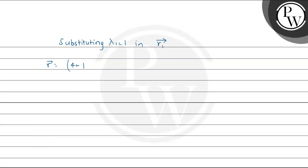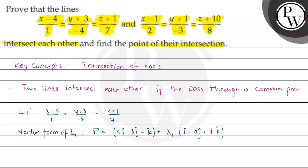Substituting λ1 = 1 into R1 = (4 + λ1, −3 − 4λ1, −1 + 7λ1): x = 4 + 1 = 5, y = −3 − 4(1) = −7, z = −1 + 7(1) = 6. Hence the point of intersection is (5, −7, 6). I hope you understood it well — best of luck!